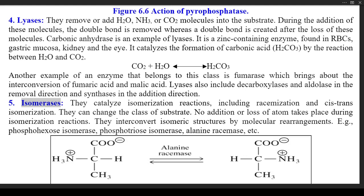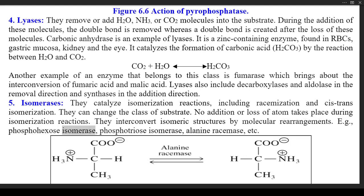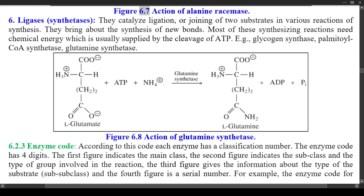Class 5: Isomerases — they catalyze isomerization reactions, including racemization and cis-trans isomerization. They can change the class of substrate. No addition or loss of atom takes place during isomerization reactions. They interconvert isomeric structures by molecular rearrangements; e.g., phosphohexose isomerase, phosphotriose isomerase, alanine racemase, etc. Figure 6.7 shows the action of alanine racemase.